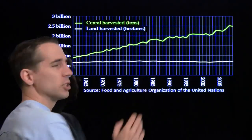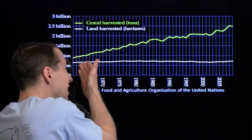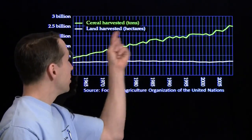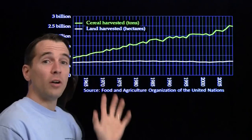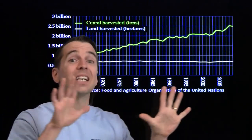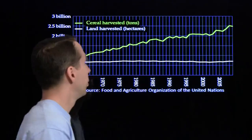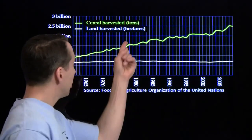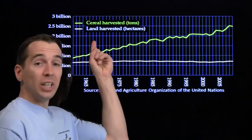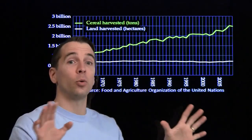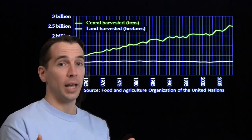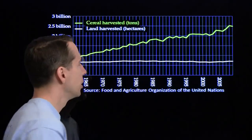Now let's see what we're displaying here. The yellow line is the number of tons of cereal harvested in the entire world. The white line is the number of hectares of land harvested, again in the entire world. A hectare is about two and a half acres.